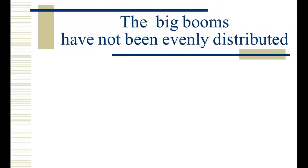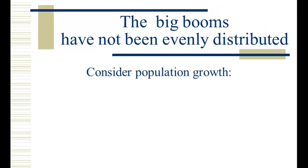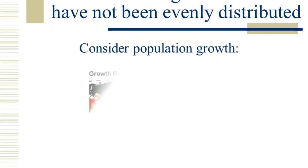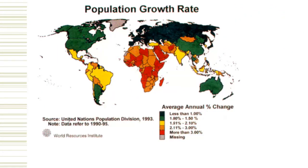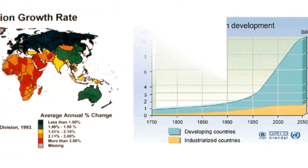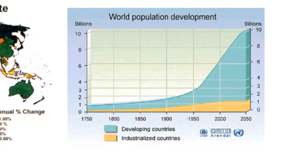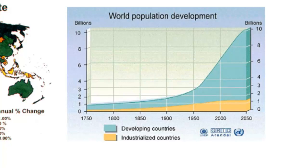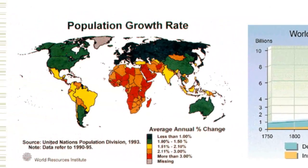These big booms have not been evenly distributed globally. We can see this first with population growth. The growth rate in populations — back in the early 90s when things were really cooking along — is not equally distributed. As this chart shows, growth has been heaviest in what are called the developing countries, and for the last 50 years it's been slowest in the industrialized countries. So one thing that seems key to reducing population growth is industrialization — it seems to bring family size down.